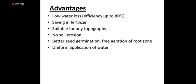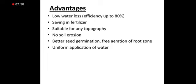Sprinkler irrigation is suitable for any topography — steep, sloped, or flat land. No soil erosion means the productive fertile soil will not run off with the water. In flood irrigation the top soil runs off with the flood, causing loss of fertile soil, but in the sprinkler system the water flows like rain all over the field without the soil running off. Better seed germination, free aeration to the root zone, and uniform application of water are additional advantages.